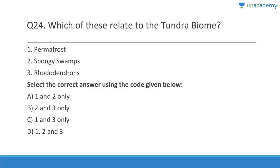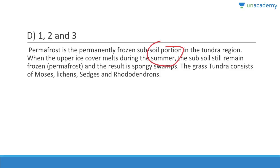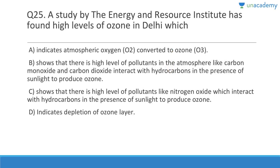When the upper ice cover melts during summer, the subsoil still remains permanently frozen all year round, resulting in spongy swamps. The grass tundra consists of mosses, sedges, rhododendrons, etc. Question twenty-five: A study by TERI (The Energy and Resources Institute) found high levels of ozone in Delhi, which shows that there are high levels of pollutants like nitrogen oxide that interact with hydrocarbons in the presence of sunlight to produce ozone. Answer is C.